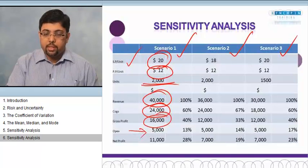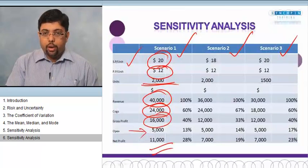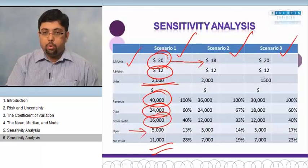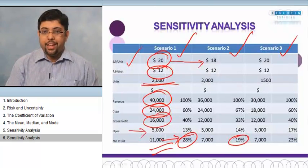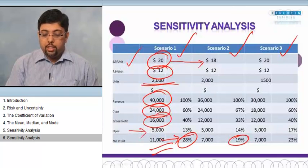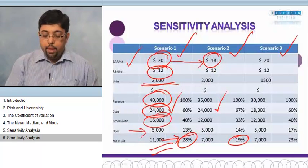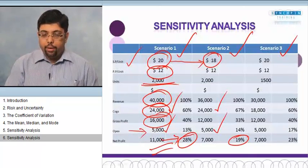In the second scenario, what I have done is I have decreased the selling price per unit from $20 to $18. What has happened? The percentage return which I was getting from 28% to 19% has dropped. The only change has happened in the selling price. You'll find that the COGS are still the same and the OPEX or operational expense is still the same.